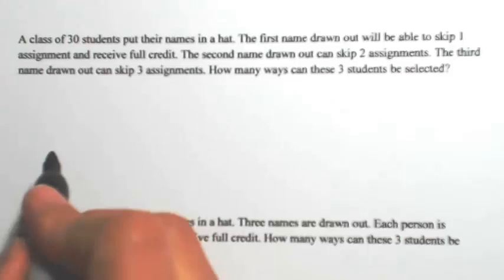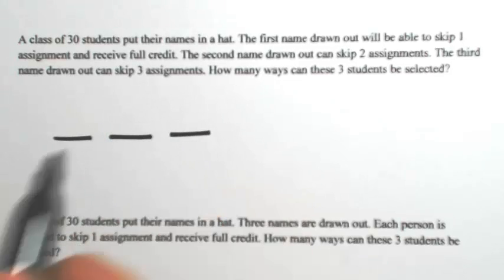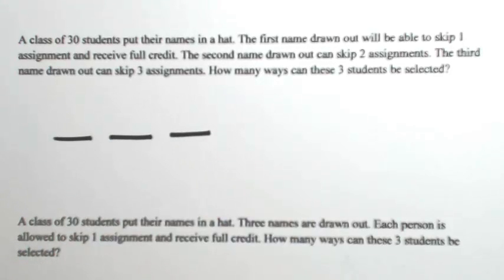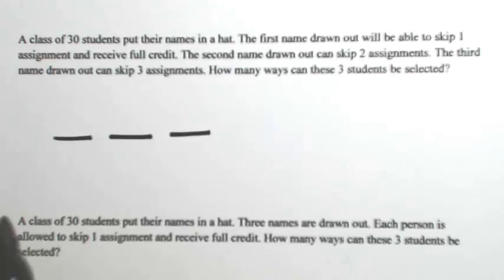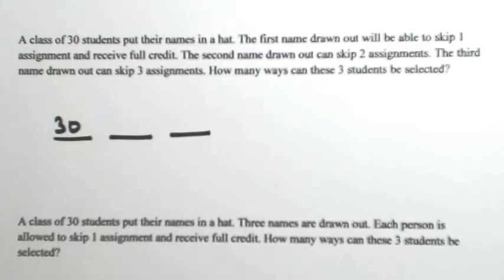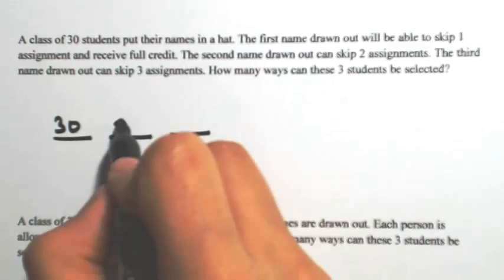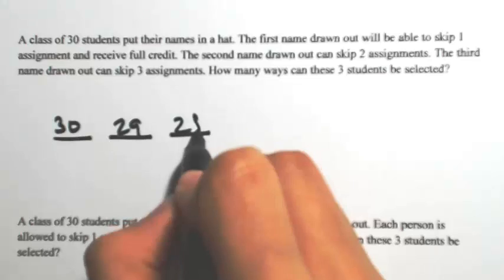Because we're picking three students, I'm going to make three spaces for them. In the class of 30, the first name is going to have 30 possibilities. Once that name is selected, you're not going to put the name back in the hat, so now we've got 29 and then 28.